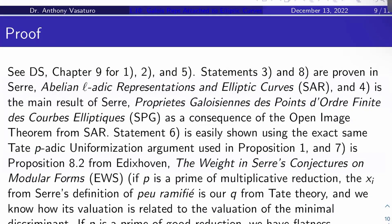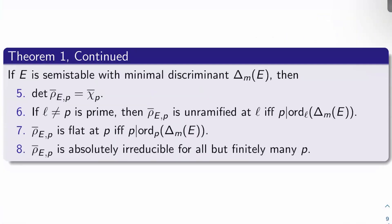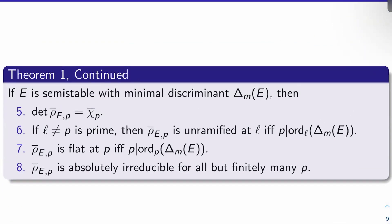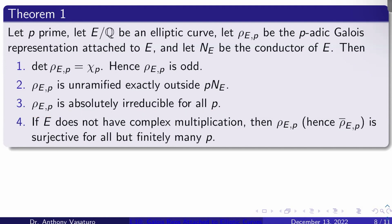One more comment: if you read Serre's works SAR and SPG, you might think that parts 3 and 8 as worded here are incorrect, because Serre's results hold for elliptic curves over any number field, and he requires the curve not have complex multiplication over that field. But I'm taking E over Q, and any elliptic curve over Q cannot have complex multiplication over Q. So when I specialize Serre's result to Q, the absolute irreducibility results hold for all elliptic curves over Q — I don't need to add a qualifier. Anyway, see you all next time, thanks for watching.